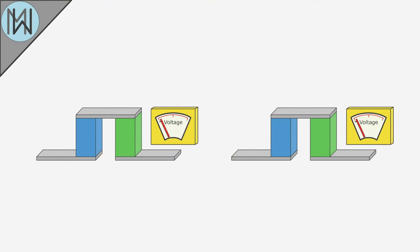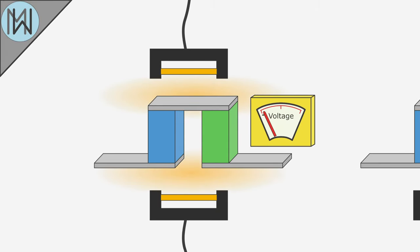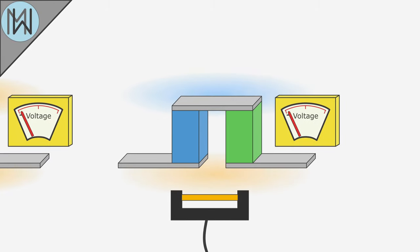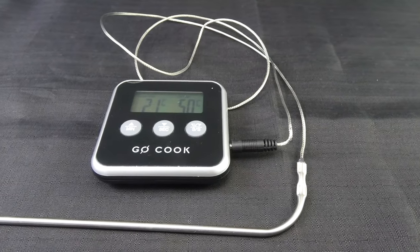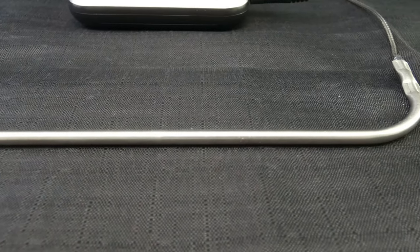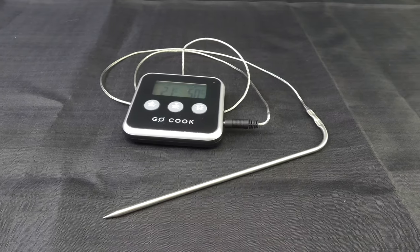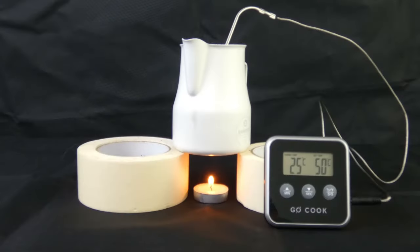The voltage-generating capabilities of thermocouples vary with the heat differential they are exposed to. If there's a small differential, a small amount of power is generated; if the differential is larger, more power is generated. This relationship is well understood, and as such it can be used to infer temperatures. Here we have a meat thermometer. Inside the probe is the hot side of a thermocouple junction, and outside it is the cold junction. This works the same way as the thermocouple in our thermoelectric generator — its parts are just a little more spread out. As the temperature increases at the probe relative to the temperature outside of it, a larger voltage is generated. This voltage is measured, and the corresponding temperature can then be calculated.